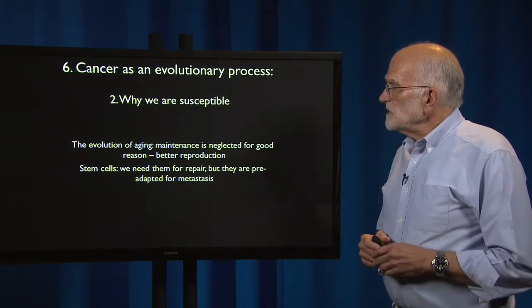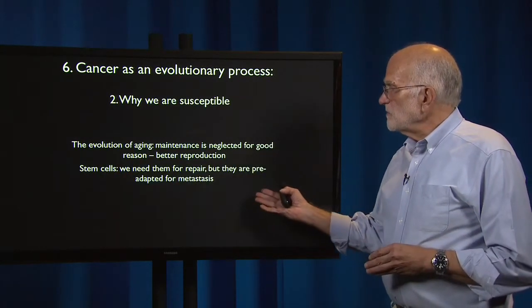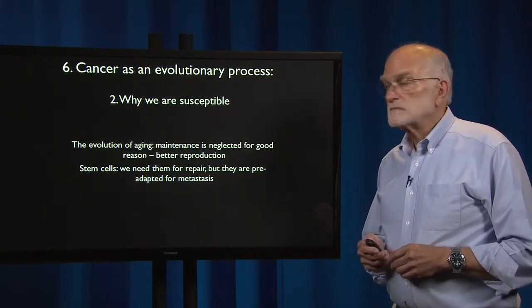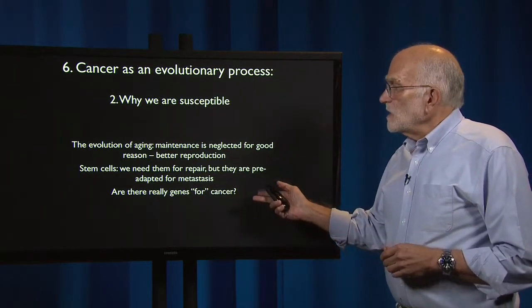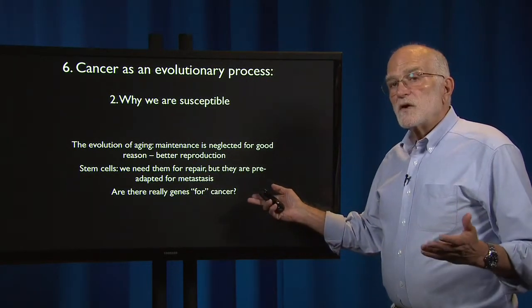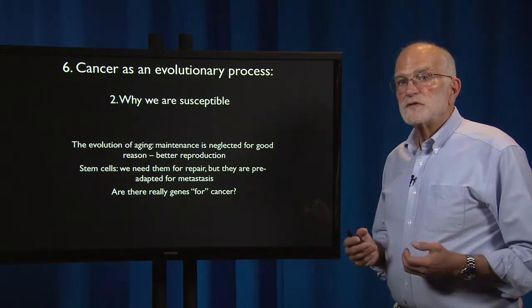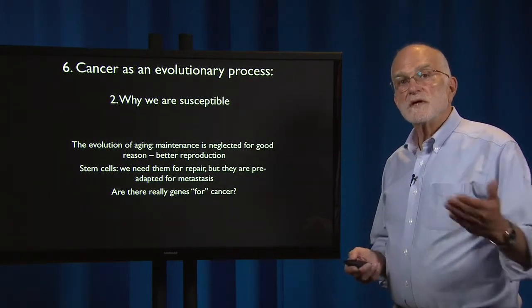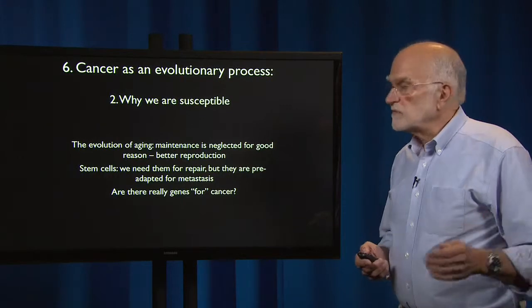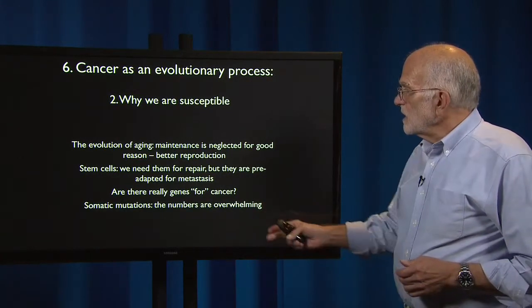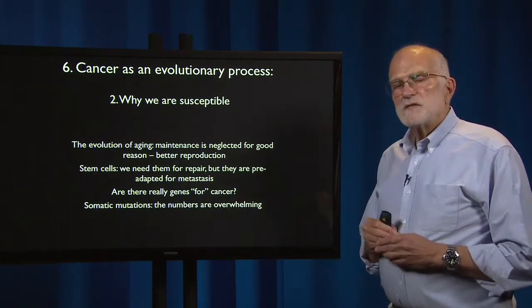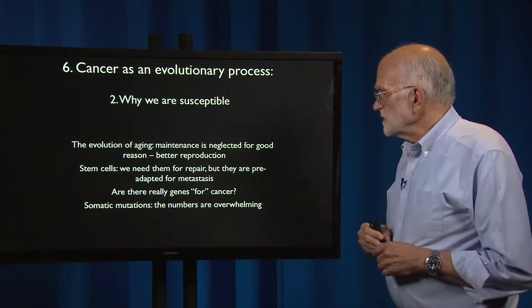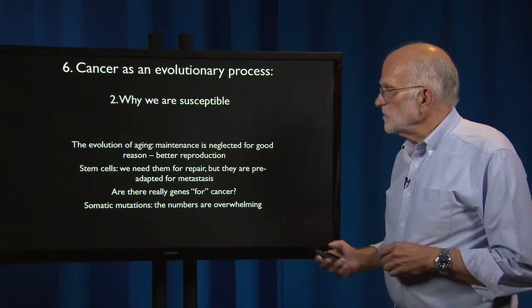We have stem cells and we need them for repair, but they are pre-adapted for metastasis. There really aren't genes for cancer. Most of the genes that are involved in cancer are actually doing something else early in development. The possibility for somatic mutation is simply enormous — the numbers are overwhelming.